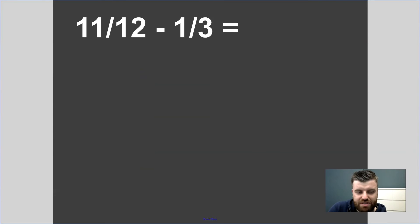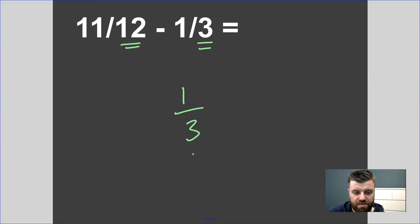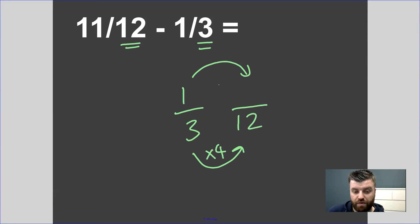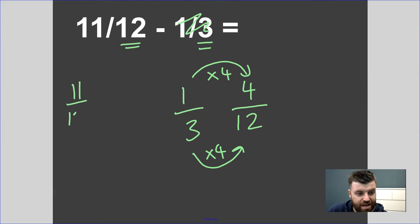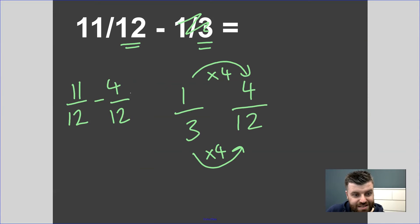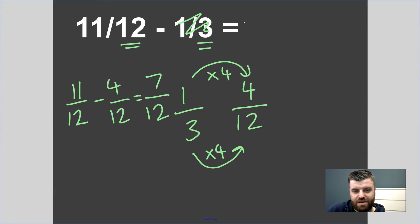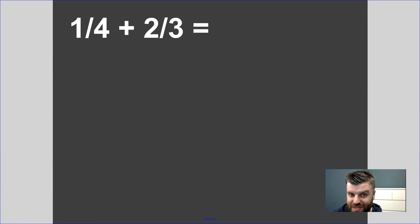Of course, it's the exact same for subtraction. Here we have a denominator of 12 and a denominator of three. I know I can change one third using the equivalent fraction rule into twelfths, because three is a factor of 12 — multiply by four, do the same to the numerator, and we have four twelfths. Rewrite the question: eleven twelfths subtract four twelfths. The denominator stays the same, and eleven take away four is seven, so the answer is seven twelfths.